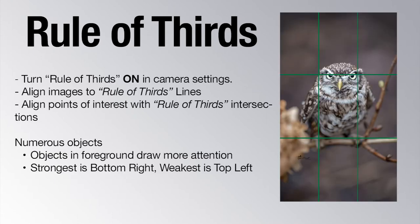To summarize: first, turn the rule of thirds on in your camera — whether it's your iPhone, your DSLR, it's usually found in the settings. Once you've done that, try to align your images with these lines. Faces, horizons, and points of interest should all fall on these lines or intersections. Follow these steps and your images will look a lot better.